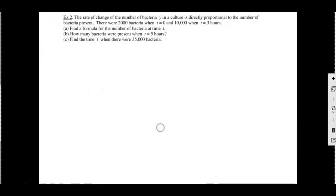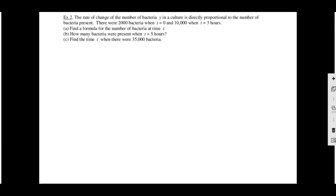The next one is about the same, just a little bit harder. It says the rate of change of the number of bacteria y in a culture is directly proportional to the number of bacteria present. There are 2,000 bacteria when time equals zero, and 10,000 bacteria when time equals three. We're a bit scared because we don't have the differential equation given to us for free — we're going to have to find it ourselves.